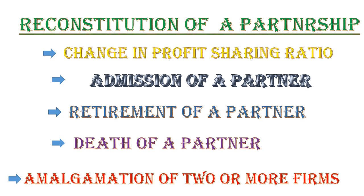Change in profit sharing ratio means sometimes a partner does more work than others. You know there are active partners and sleeping partners — we cannot give sleeping partners as much profit share. If any partner realizes they are doing more work for the business but not getting enough profit share, they will argue for more. In that situation, we have to change the profit sharing ratio — that is called change in profit sharing ratio.